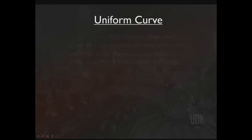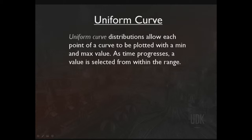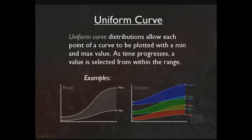Next we have a uniform curve. Uniform curve distributions allow each point of a curve to be plotted within a min and max value, and as time progresses, a random value is going to be selected from within that range. For a float, notice we have two curves — a min curve and a max curve — and the shaded area in between is the random area from which a value would be called. An important thing to keep in mind is you would generally want to avoid using this distribution on anything that's going to be called on every single frame of animation, because that means on every single frame you're going to get a brand new random value, which will cause a jitter.